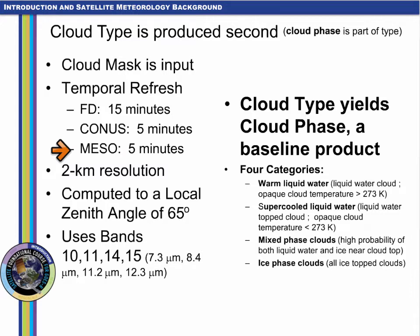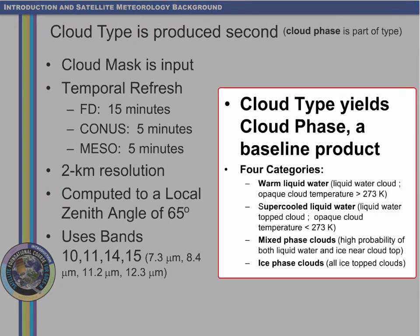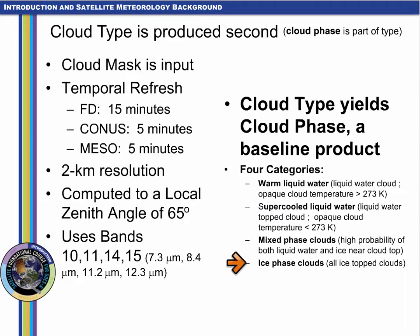Cloud type is computed out to a local zenith angle of 65 degrees and only uses infrared bands 7.3, 8.4, 11.2 and 12.3 microns to avoid day-night discontinuities that would arise if reflectance bands were used. The baseline product cloud phase, which falls out of cloud type, includes four separate categories: warm liquid water clouds, supercooled liquid water clouds, mixed phase clouds, and ice phase clouds.